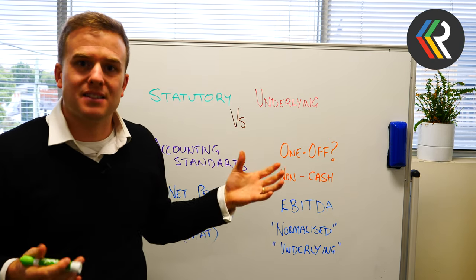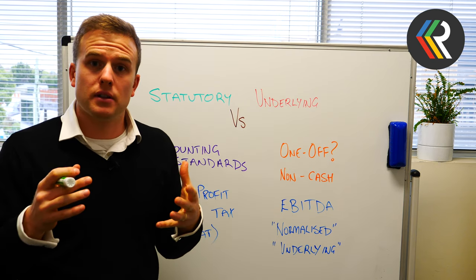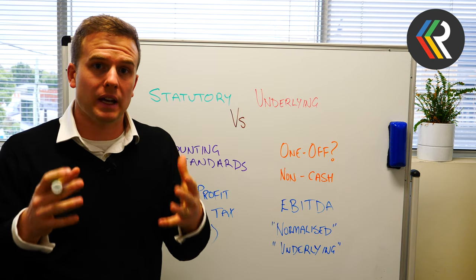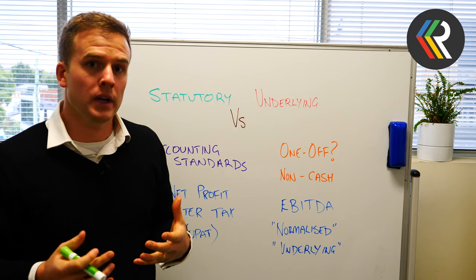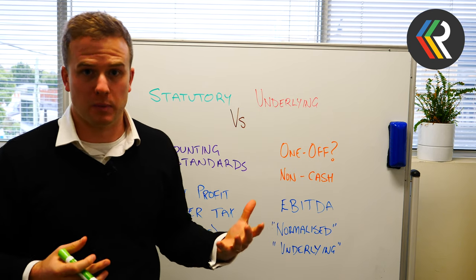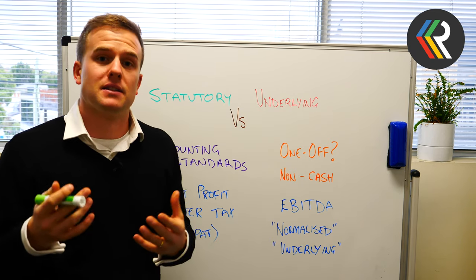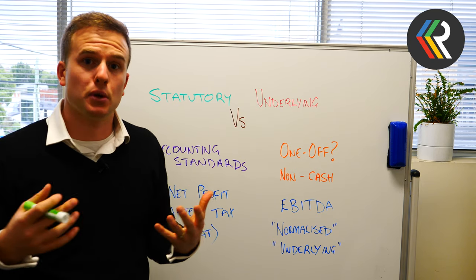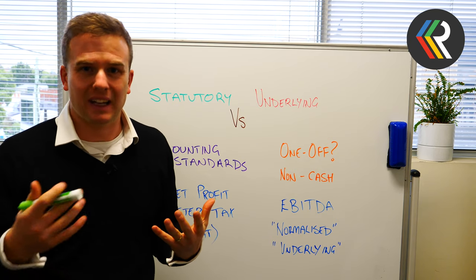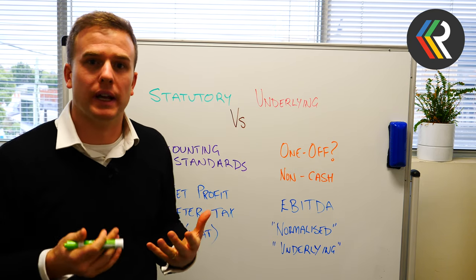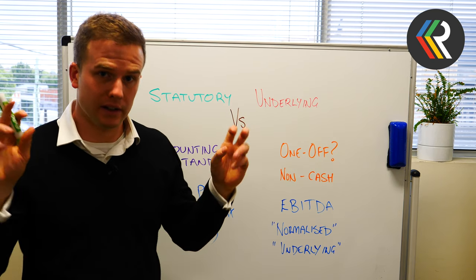There are instances where it does make sense to focus on underlying, but you as the analyst or investor need to understand what is being excluded and why it is being excluded. Based on that, you can make an assessment of the business, but also of management's integrity, their candor, and how genuine they are when presenting underlying results.